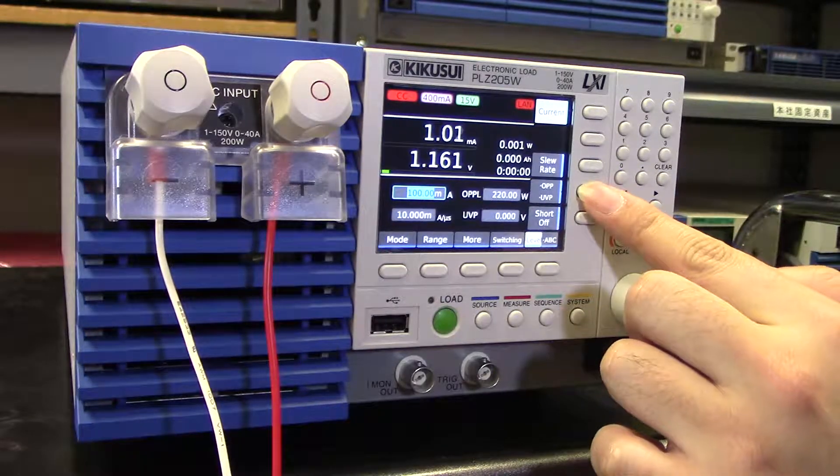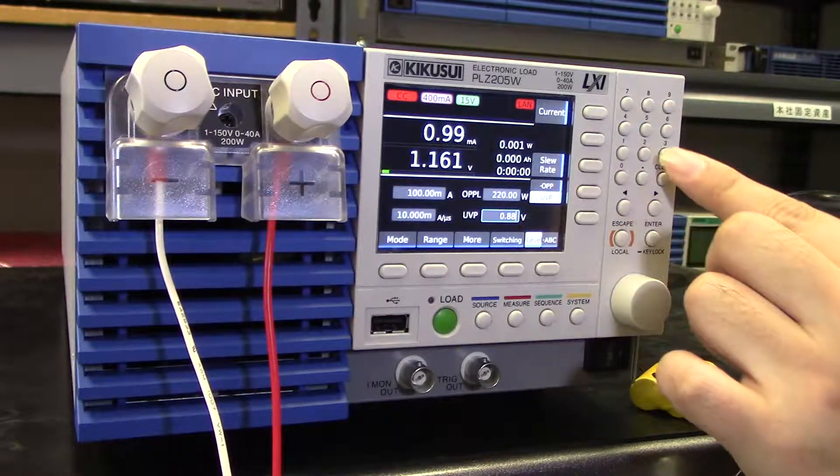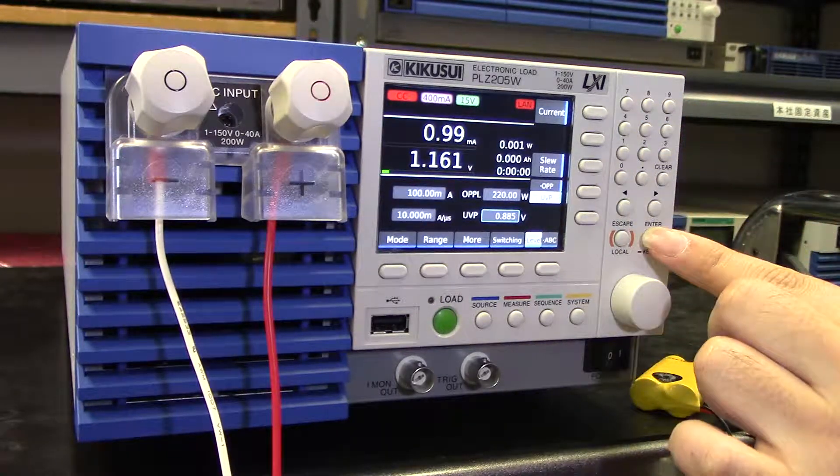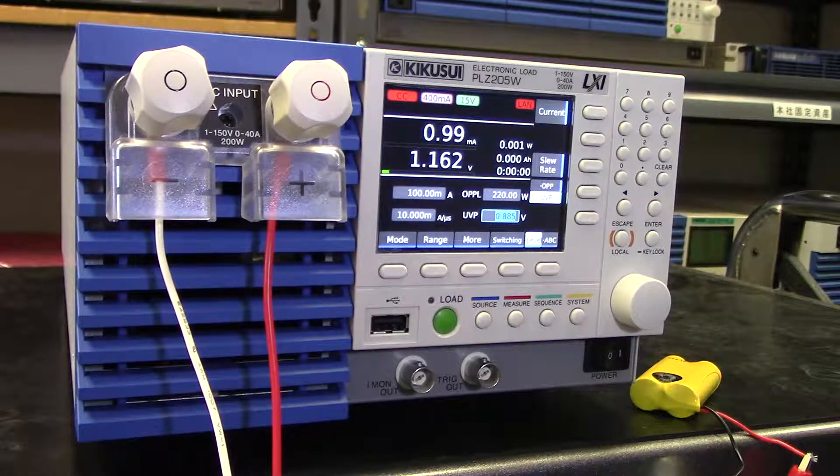Next, set the minimum voltage level by setting the UVP or under voltage protection function of the PLZ5W to the desired value. This will turn the load off when the set voltage is actually reached.